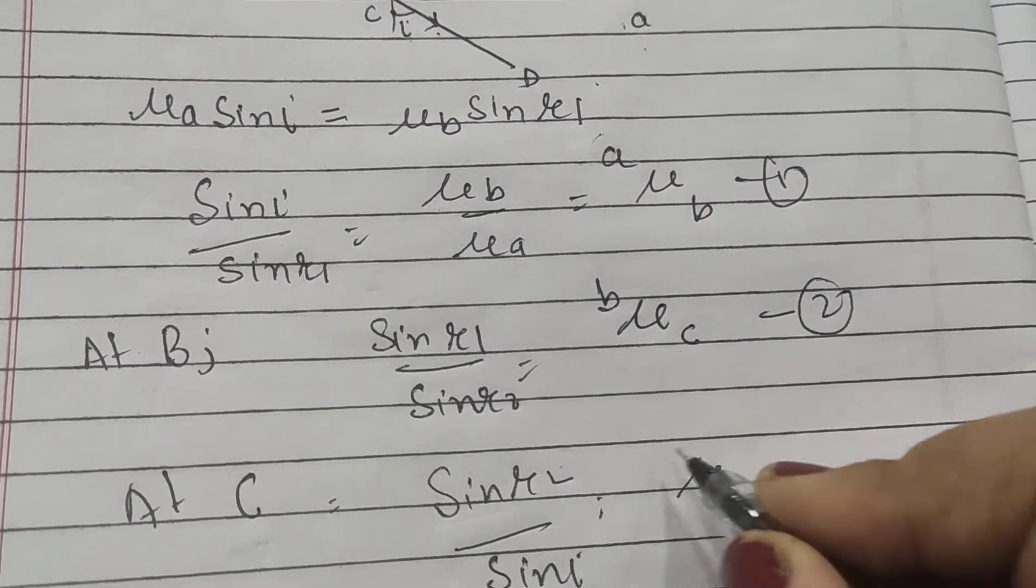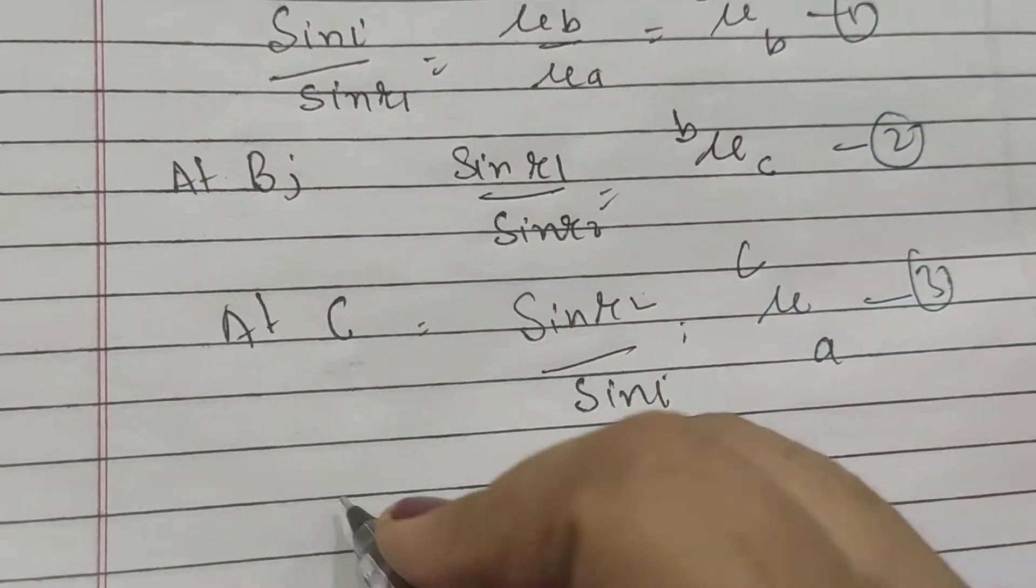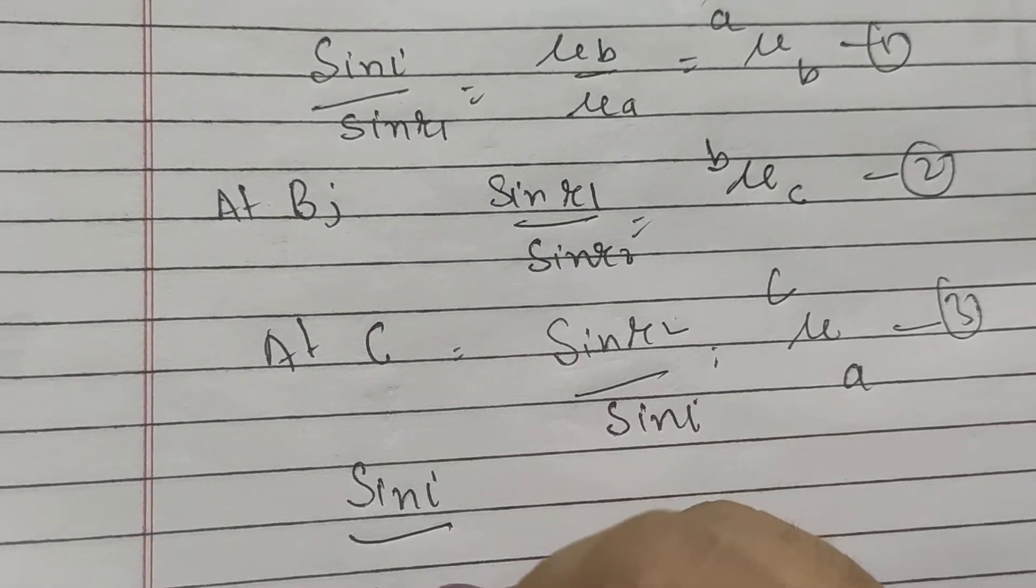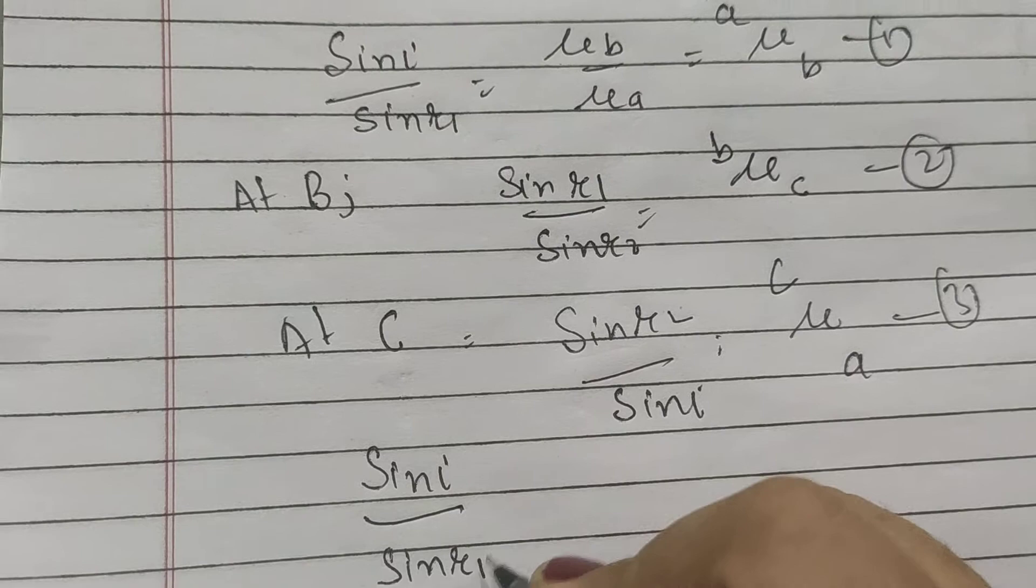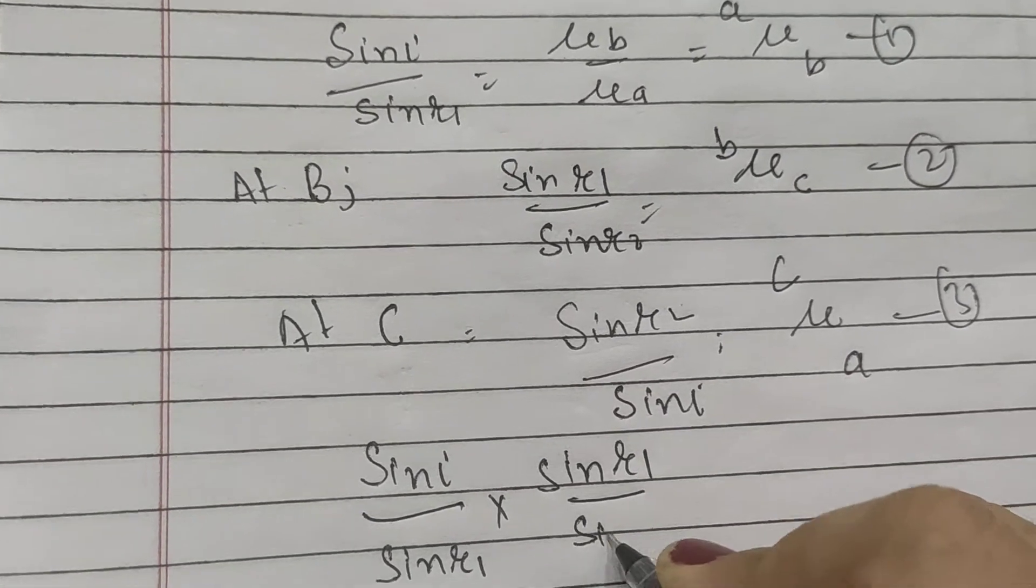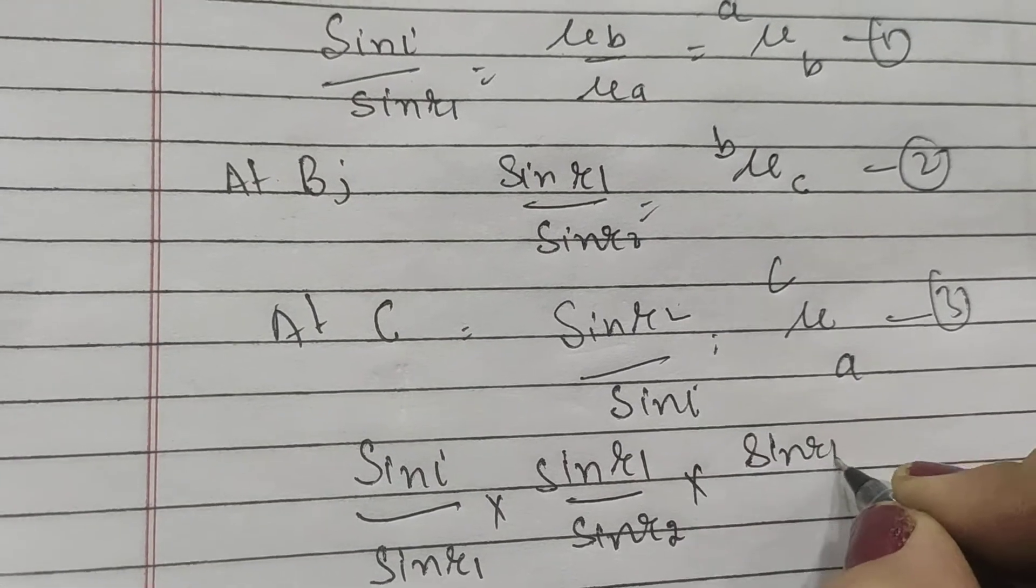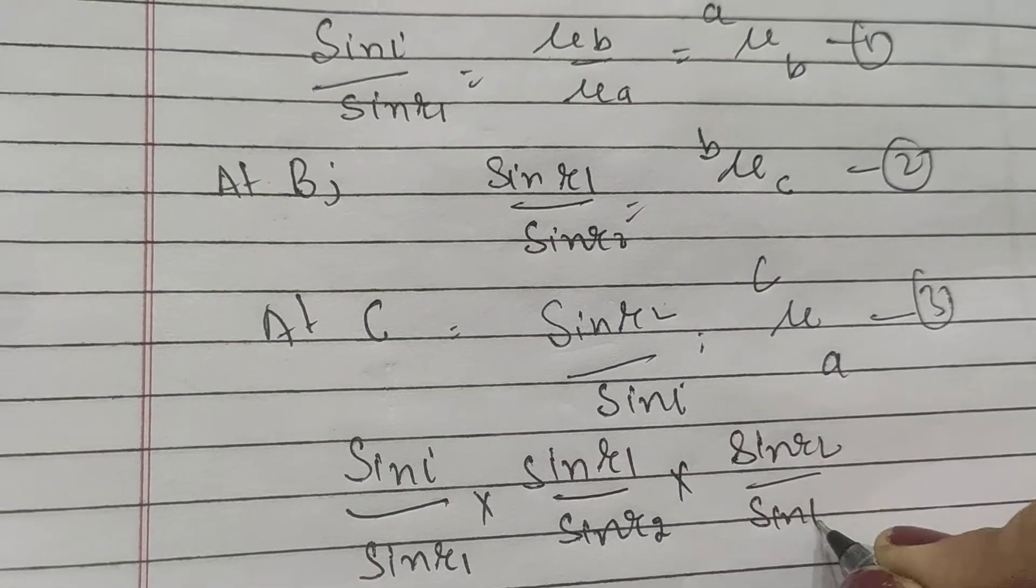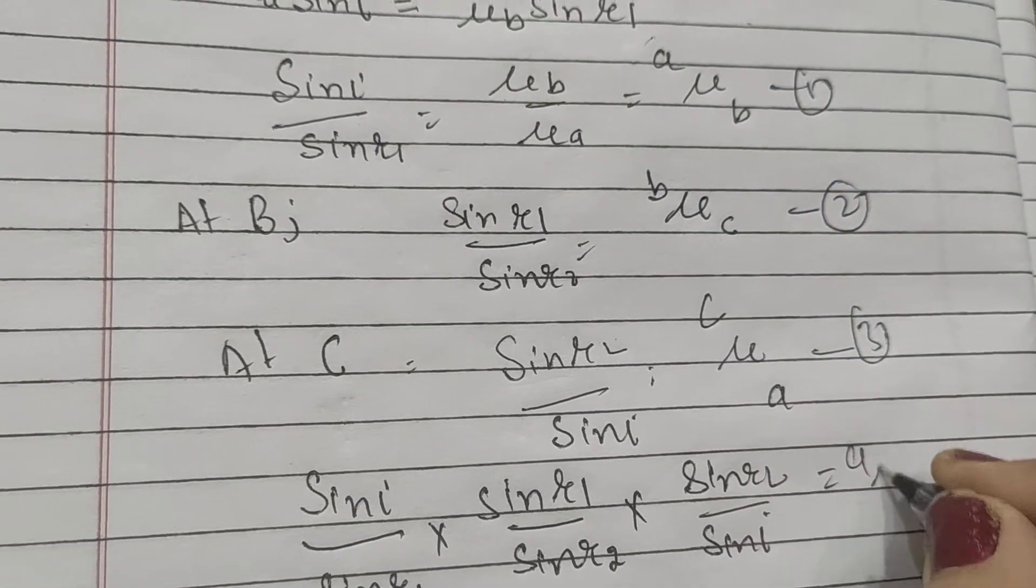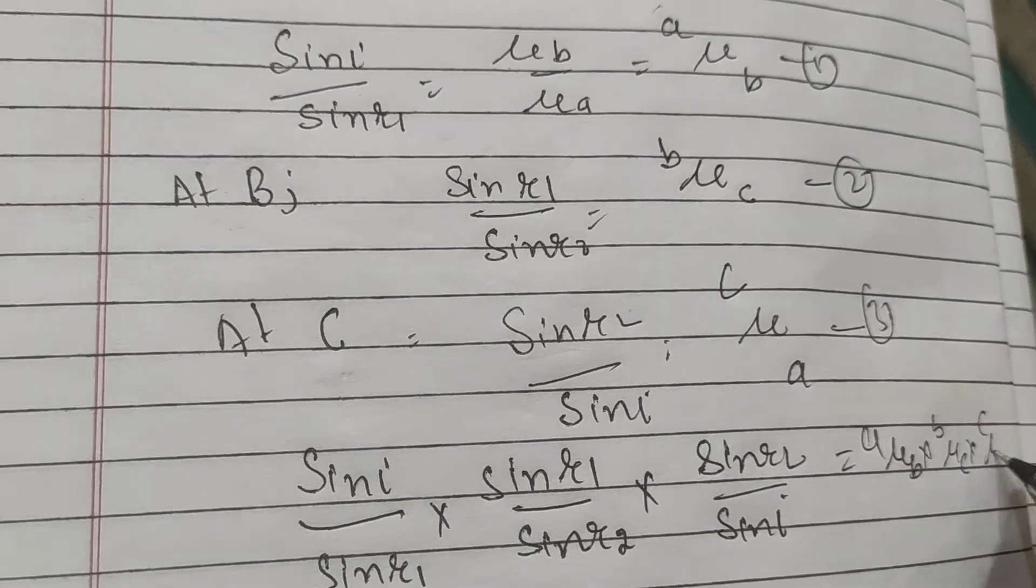Now multiplying all the three equations, we will be having sine I by sine R1 times sine R1 divided by sine R2 times sine R2 divided by sine I. Similarly, multiplying the right-hand side also: A mu B times B mu C times C mu A.